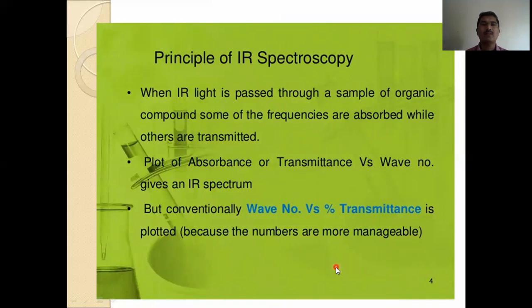Now, we can see the principles of IR spectroscopy. The principle is when IR light is passed through a sample of organic compound, some of the frequencies are absorbed while others are transmitted. Plot of the absorbed or transmitted versus wave number gives an IR spectrum. But conventionally, wave number versus transmittance is plotted because the numbers are more recognizable.